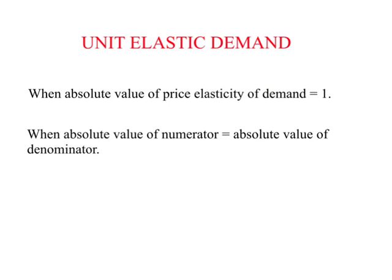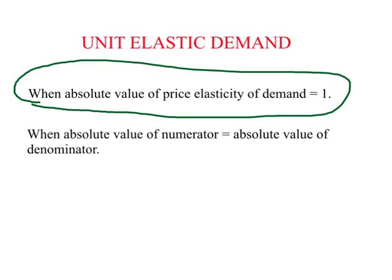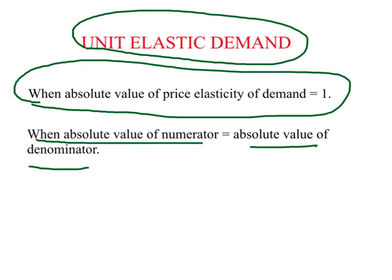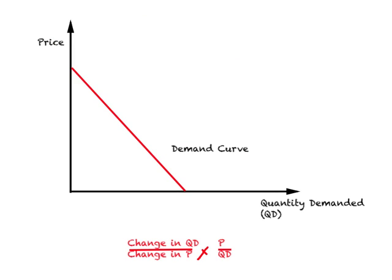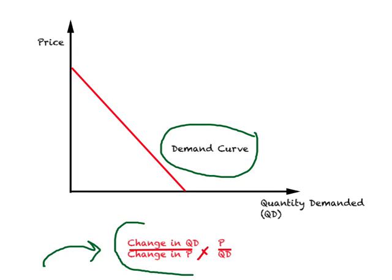When the absolute value of price elasticity of demand is equal to 1, the absolute value of the numerator equals the absolute value of the denominator. So when price increases by 5%, demand will fall exactly by 5%. If this happens, it is called unit elastic demand — the value of own price elasticity of demand in an absolute sense is 1. Consider the case of a straight-line demand curve. Here I have written down the formula for point elasticity of demand for own price elasticity of demand.